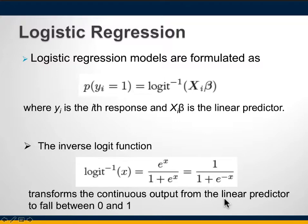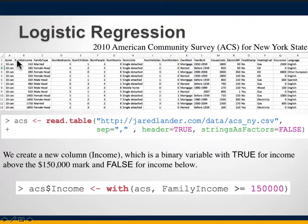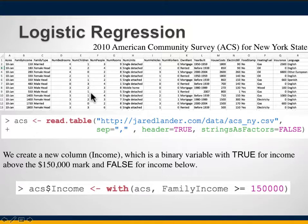The first example comes from the book, using the American Community Survey data for New York State. The data file has columns such as size of a house, number of rooms, number of people living there, type of house, and household family income — different attributes from the U.S. Census.